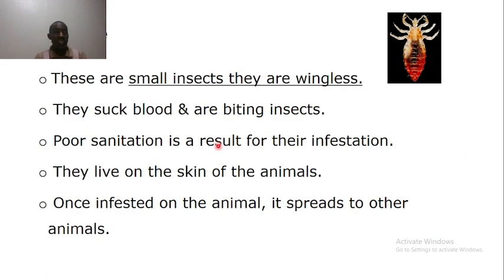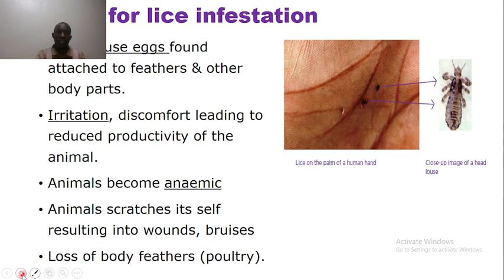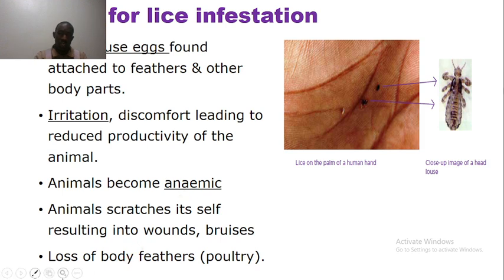The third common ectoparasite in Uganda and East Africa is lice. Lice are small wingless insects that cause irritation by sucking blood. Lice infestation is mainly the result of poor sanitation — when sanitation is poor within the poultry house we see infestation. Lice live within the skin of the animals, causing animals to scratch, anemia from blood loss, wounds, the presence of white eggs, and hair or feather loss.